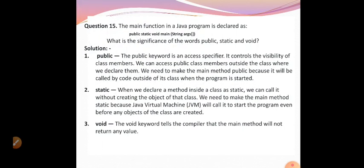The main function in a Java program is declared as public static void main(String args[]). What is the significance of public, static, and void? Public: the public keyword is an access specifier that controls the visibility of class members; we need to make the main method public because it will be called by code outside of its class when the program is started. Static: when we declare a method as static, we can call it without creating an object of the class; we make main static because JVM calls it to start the program before any object is created. Void: the void keyword tells the compiler that the main method will not return any value.